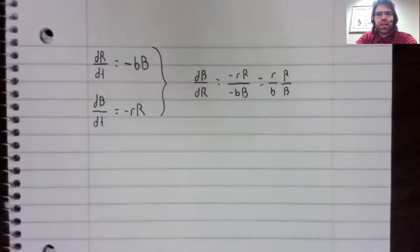And that is to ignore time and just look at the relationship that R and B have with each other: dB with respect to dR, using parametric derivatives.